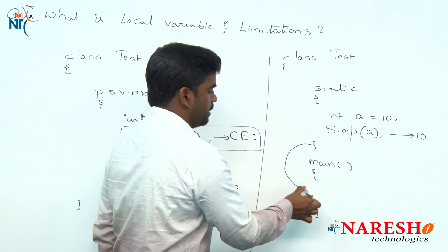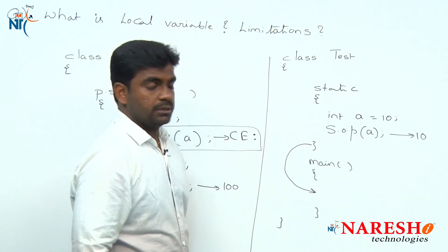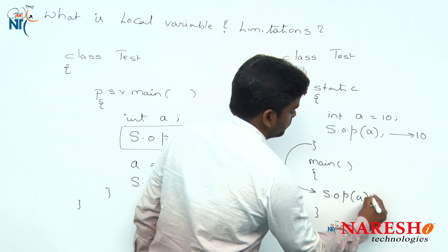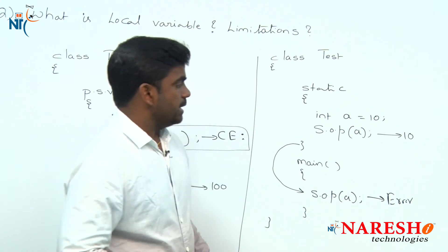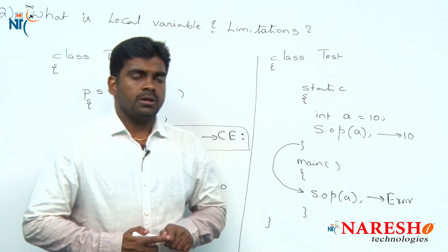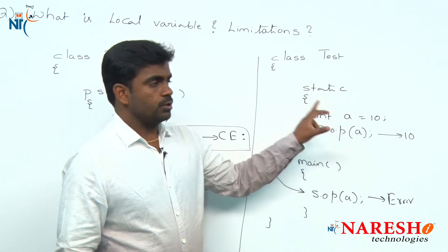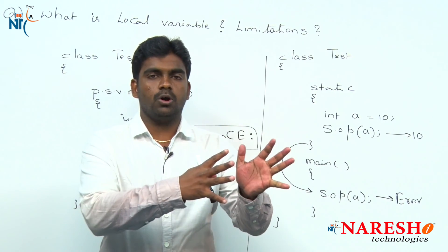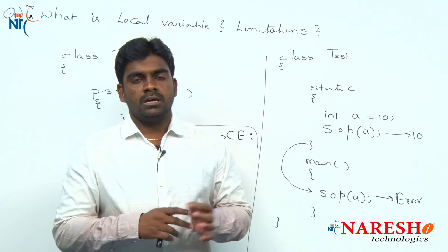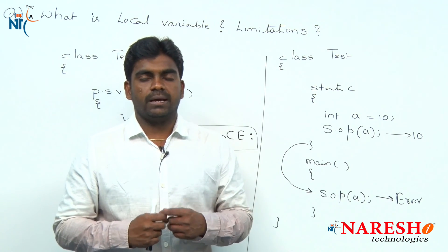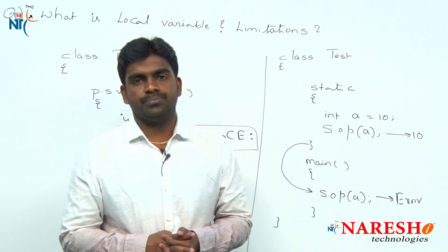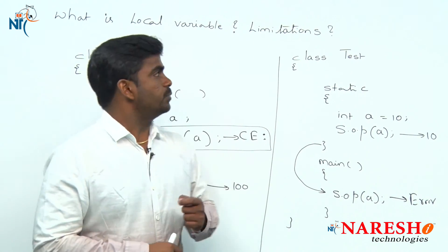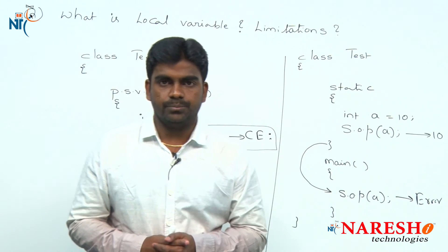When control comes to the main method and you try to access 'a', it will give an error message. The reason is that a local variable of any block or method can be accessed only within that block or method. If you try to access it from outside the block, it will give an error. So these are the basic points — what is a local variable and what are its limitations.